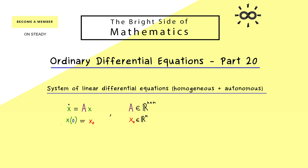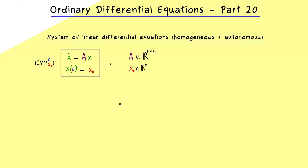Therefore, let's put the initial value problem into a box and call it EVP. And by the Picard-Lindelöf theorem, you already know that we have a unique solution for this initial value problem. Moreover, we also know that we have a global solution, so the solution is defined for all points in time. And now if you remember the proof of the Picard-Lindelöf theorem, you know that we used the Banach fixed point theorem there, and exactly this one also gives us an iteration scheme to find the solution. We call it Picard iteration and we have already discussed it in part 13.